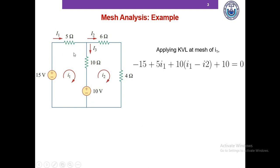In this mesh we encountered four elements, which is why there are four terms on the left-hand side of this KVL equation — each term represents the voltage of a particular element. I've assumed that the voltage drops are positive and voltage rises are negative.